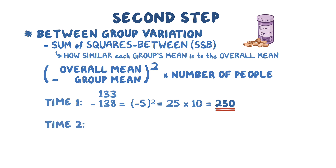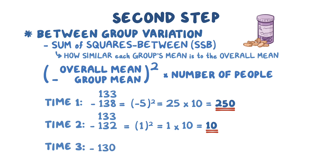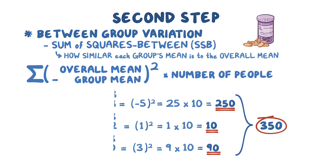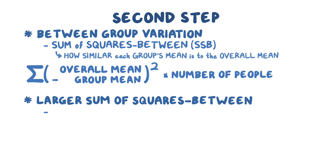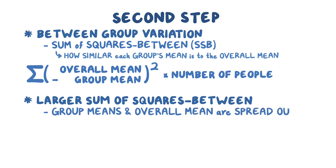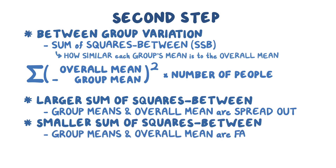For the time 2 group, the mean is 132, so 133 minus 132 is 1, and 1 squared times 10 equals 10. For the time 3 group, the mean is 130, so 133 minus 130 is 3, and 3 squared is 9, and 9 times 10 is 90. Adding them all together: 250 plus 10 plus 90 equals 350. A larger SSB tells us the group means and overall mean are spread out, while a smaller SSB tells us they are fairly similar.